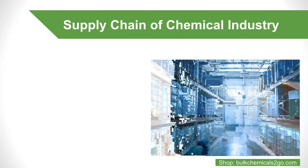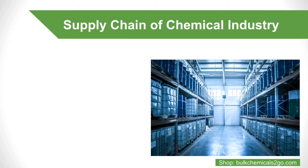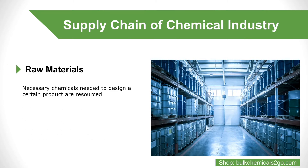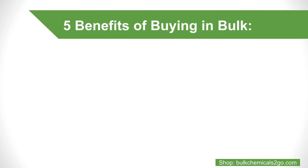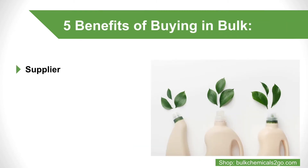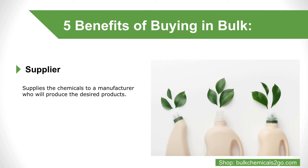Supply Chain of the Chemical Industry. 1. Raw Materials: The necessary chemicals needed to design a certain product are resourced. Next, the supplier either buys the raw materials, or the supplier and the raw materials producer are one and the same. 2. Supplier: The supplier supplies the chemicals to a manufacturer who will produce the desired products.